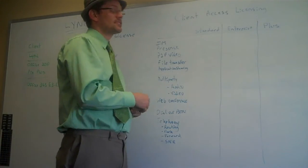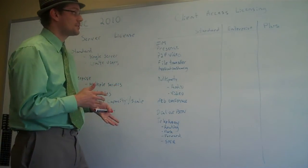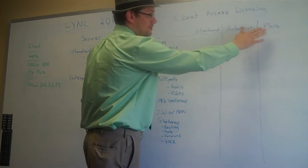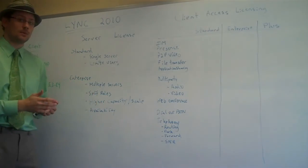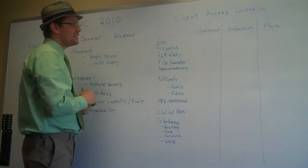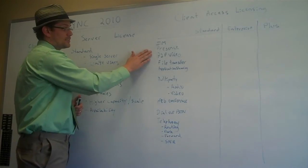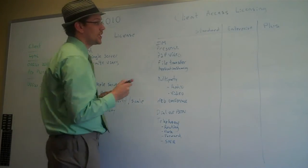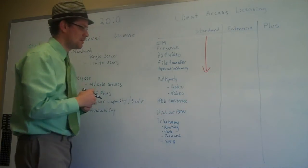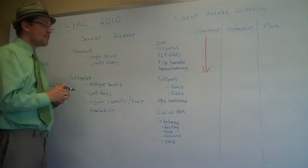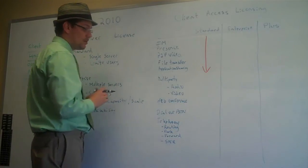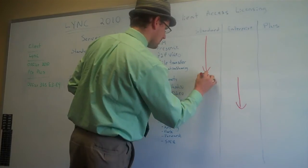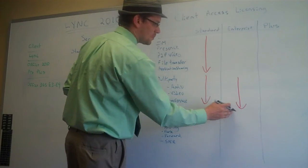Secondly, for client access licenses, there are three different types, and they're additive. You start with standard, then you add enterprise, and then plus, to get all functionality within Lync. Within standard, to get the basic functionality — which is IM, presence, point-to-point video, file transferring, and application sharing — you're going to need the standard CAL. Once you want to add multi-party audio or video for web conferencing, you're going to have to purchase the enterprise CAL as well to get that functionality.